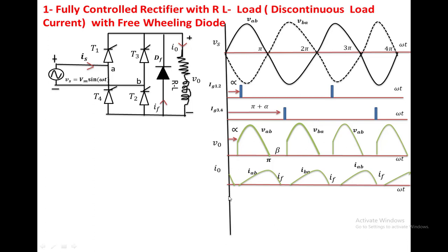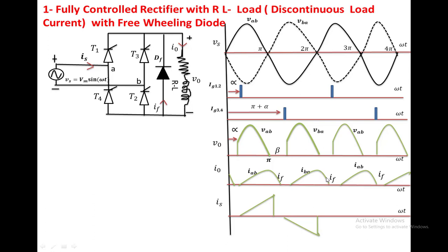For the source current waveform: when T1 and T2 are conducting (alpha to pi), the source current equals the load current and is positive. At pi, the freewheeling diode conducts and the source current drops to zero. From beta to pi plus alpha, no device is conducting and the source current remains zero. At pi plus alpha, T3 and T4 turn on and the source current becomes negative, equal in magnitude to the load current but mirrored. The freewheeling diode then conducts again and the source current returns to zero, repeating the same pattern.